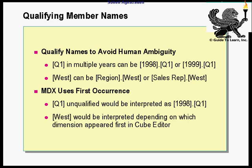MDX uses the first occurrence. That means if you don't specify the year for quarter one, it would default to 1998 because 1998 was perhaps created first. West would be interpreted depending on which dimension appeared first in the cube editor. For quarter one, it goes with 1998 because it is a smaller number. But in the case of region and sales rep, since they are character-based, you go with the first one that was created in your dimension.